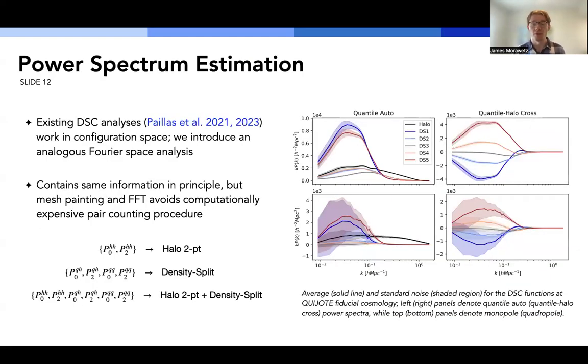So all existing density split analyses until this point have worked exclusively in configuration space, where we use correlation functions. In our case, we introduce an analogous Fourier space version for the first time, so that we can compare the two different methods. And in principle, they should contain the same information, but the mesh painting and the FFT can also avoid the computationally expensive pair counting procedure that accompanies a correlation function. And this is particularly relevant for upcoming surveys, which will have very high number densities and thus be very computationally expensive. To illustrate the different density split functions that we're including here, on the right, I've shown a plot where we have the quantile auto power spectra and the quantile halo cross power spectra for the fiducial Quijote cosmology. And in the next slide, I'm going to actually start showing some of the constraints that we observe. But before I do, we'll be considering three categories for constraining power. We'll be considering just the halo two-point power spectrum, the density split functions, and then a joint fit between the halo two-point function and the density split functions.